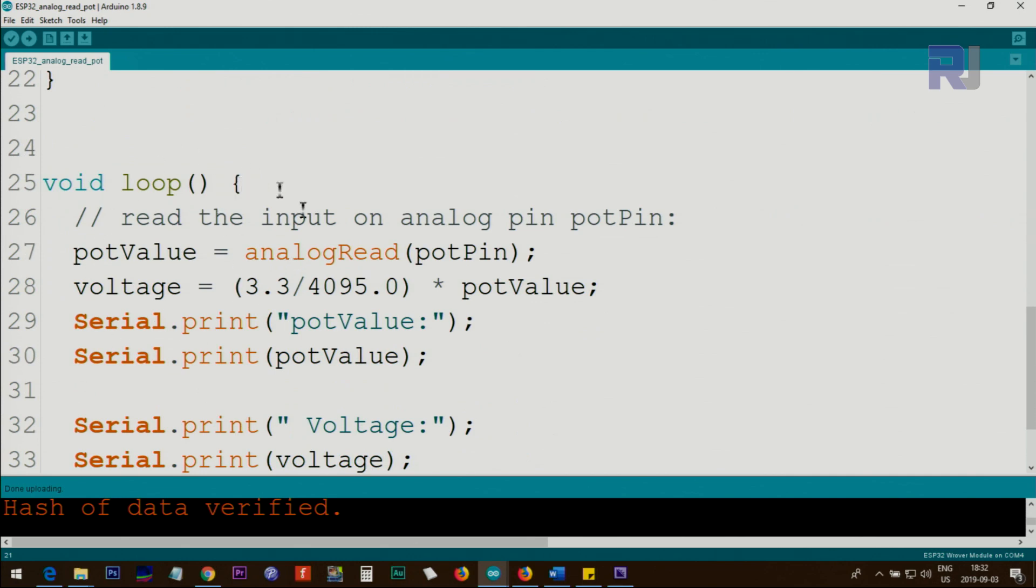Inside the loop which runs continuously, we are reading using analogRead the potPin which has been defined above as 39. The value will be between 0 to 4095 which I just explained before. The value will be stored here depending on the voltage. Then the voltage is calculated because the maximum voltage is 3.3 and the maximum points is 4095 (12 bit), so we divide 3.3 by 4095. This ratio multiplied by potValue will give us the voltage with respect to 3.3 volts.